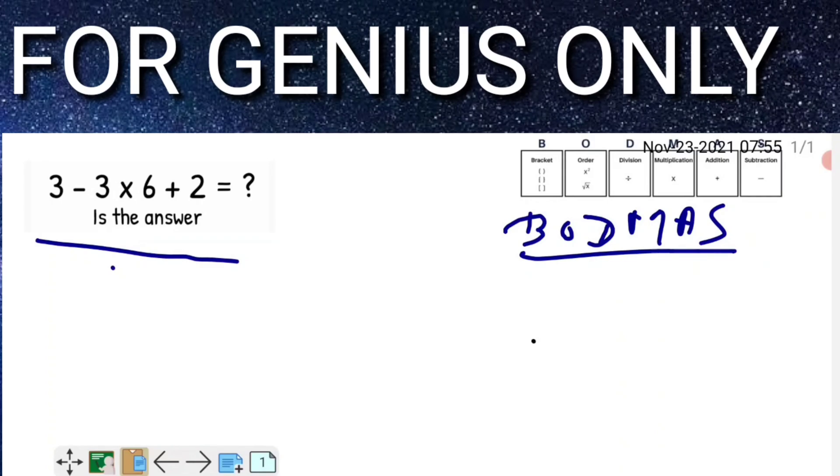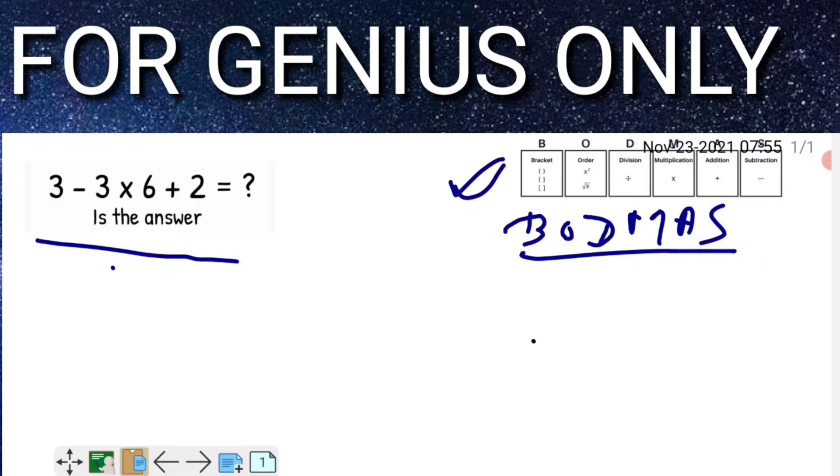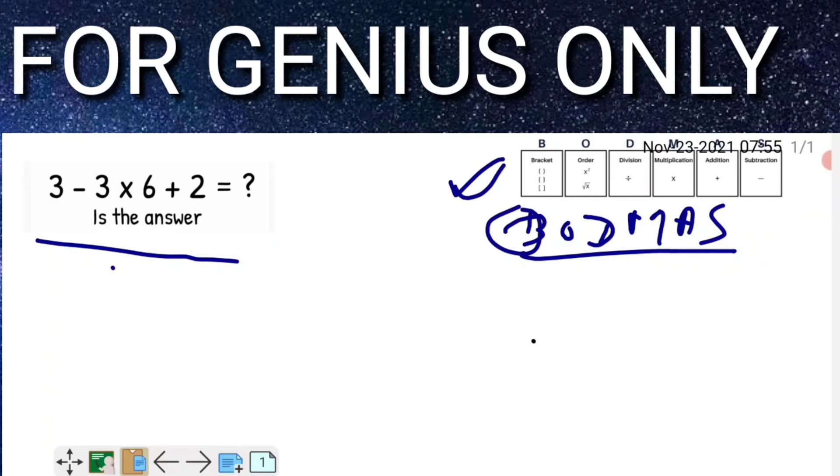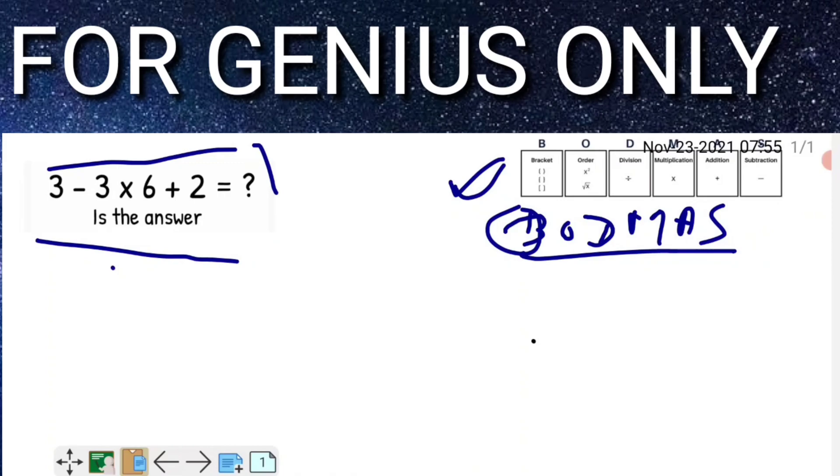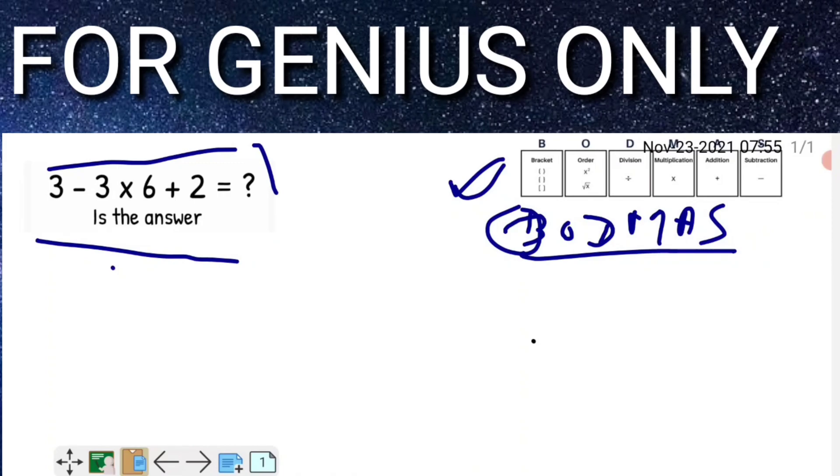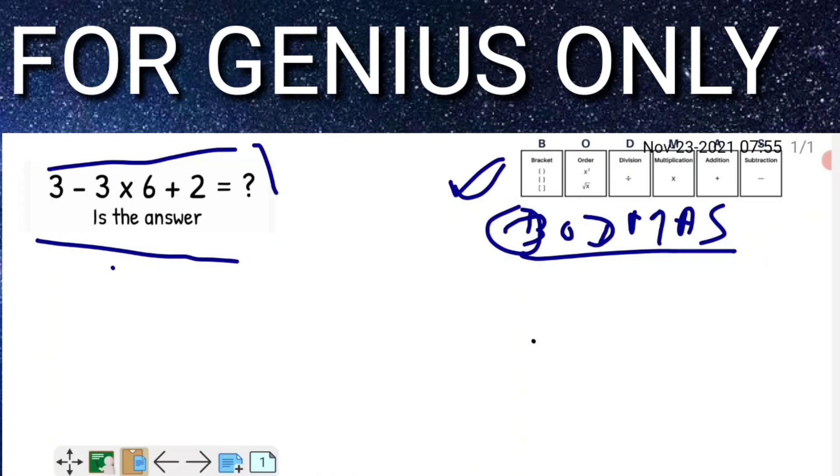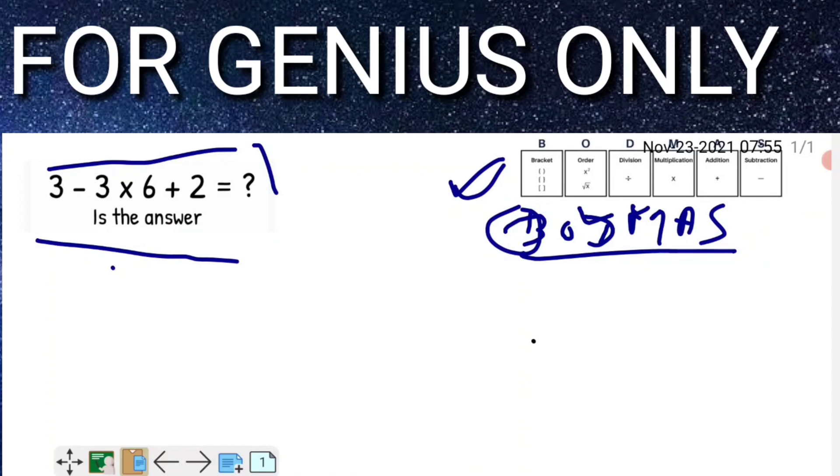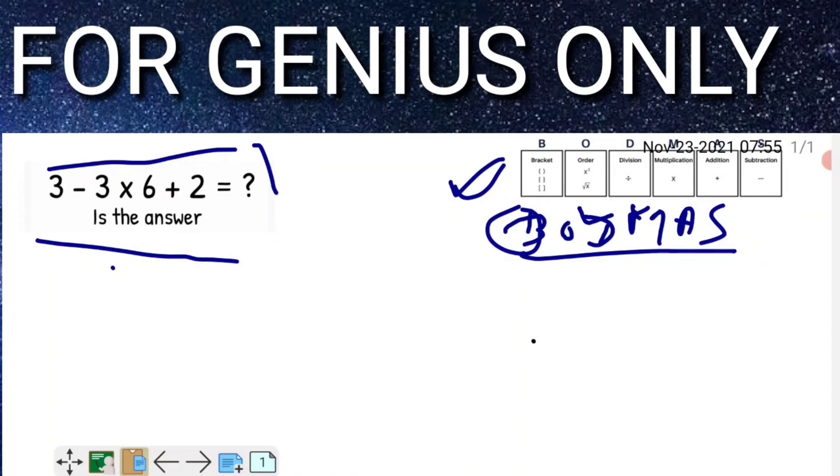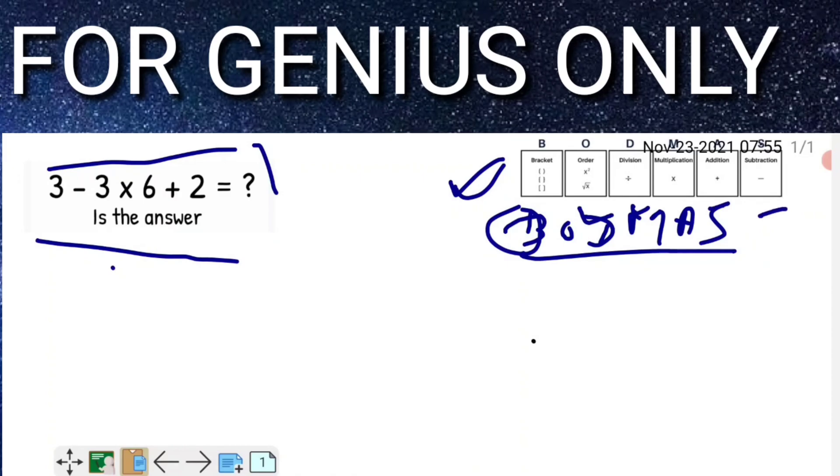So friends, see here what we will follow. First, we have to do all calculations inside the bracket. If any bracket is available in this equation, we have to calculate that one first. After that, other means if a square and under a square are available, I have to solve that one first. After that, division, then multiplication, then addition, and last is subtraction.